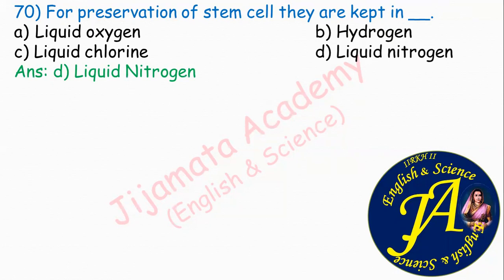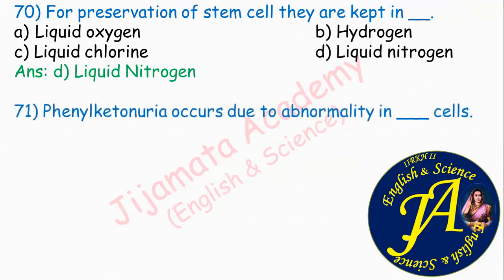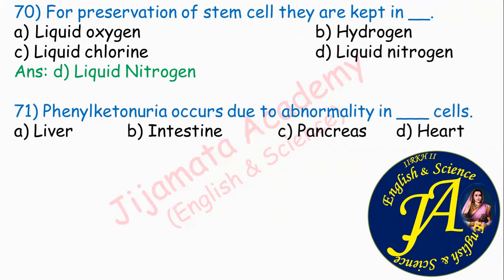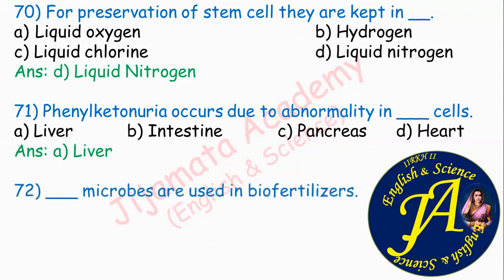Phenylketonuria occurs due to abnormality in dash cells. Options are liver, intestine, pancreas, heart. The correct answer is option A: liver cells, also called hepatocytes or hepatic cells. Option A is correct.